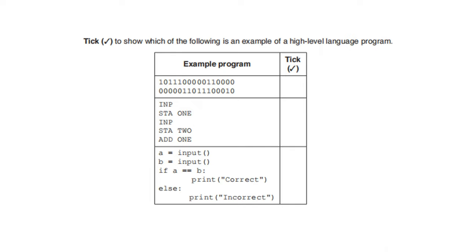Tick which of the following is an example of a high level language program. The first option uses zeros and ones — machine code, so not the example. The second uses mnemonics — assembly language. The third is correct because it uses English-like words such as 'input' and 'print' — this is the example of a high level language.